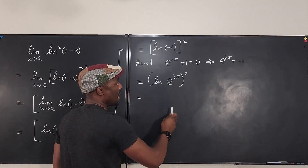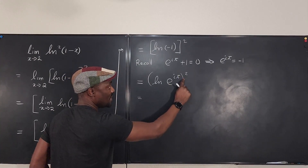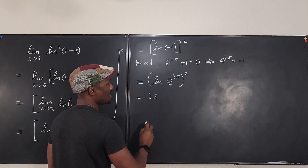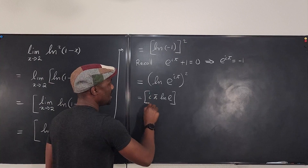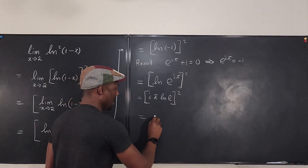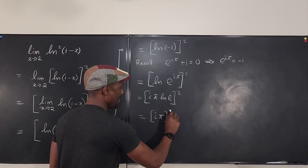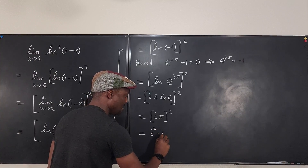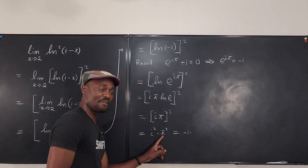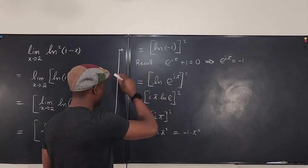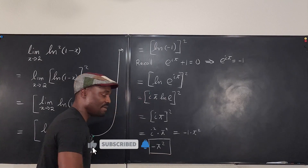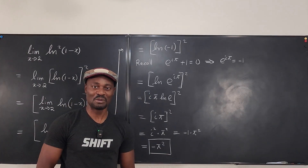The natural log of e^(iπ) raised to power 2 — remember, the entire expression is raised to 2, so don't just multiply the exponent by 2. The iπ comes down: this is just iπ times ln(e). Since ln(e) = 1, we get (iπ)², which equals i² times π². The square of i is negative 1, so the result is negative π². This limit equals negative π squared. Never stop learning — those who stop learning have stopped living.